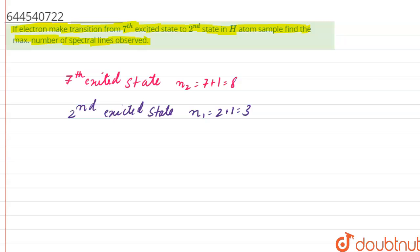So, for calculating the number of spectral lines, we use a formula that is N2 minus N1, N2 minus N1 plus 1 divided by 2.